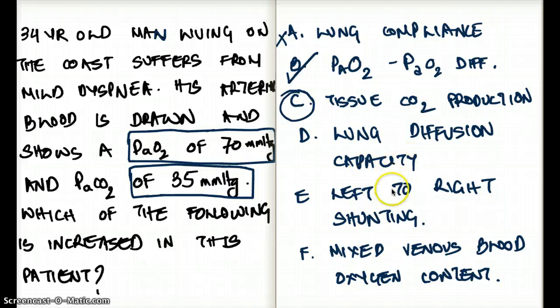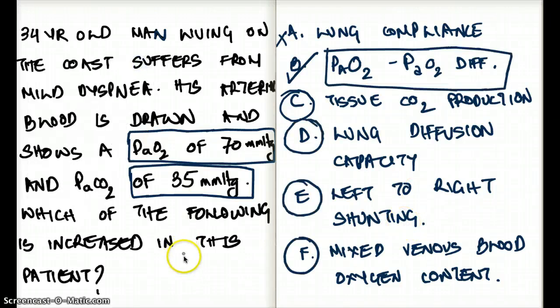Lung diffusion capacity can cause a decrease in arterial oxygen than the alveolar oxygen. But we should not forget to read the question. The question says which of the following is increased in this patient. And the diffusion capacity should not be increased for this patient. The diffusion capacity should be decreased. So reading the question, we figure out that that is not the possible choice.